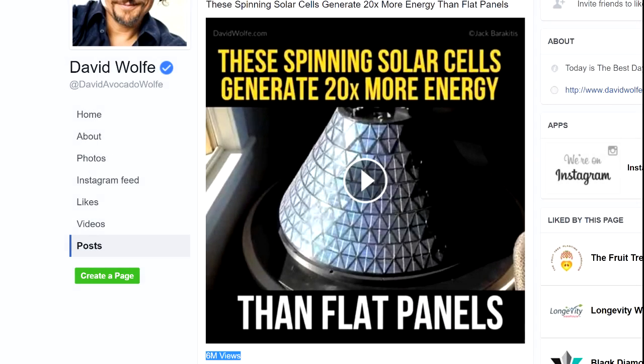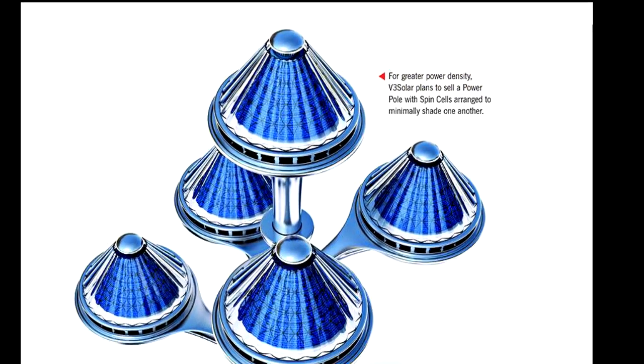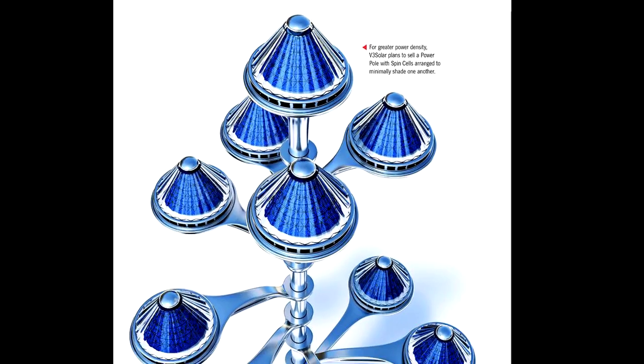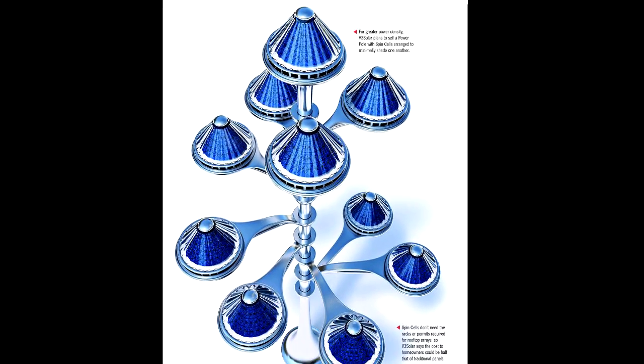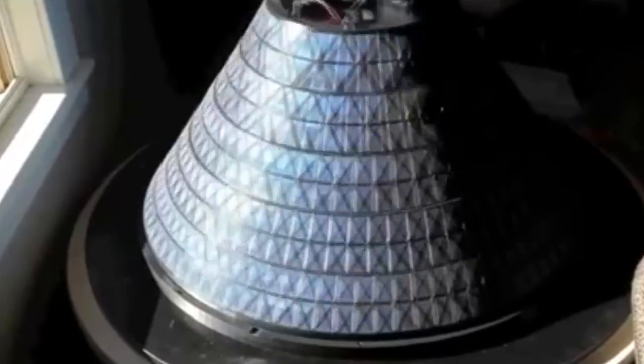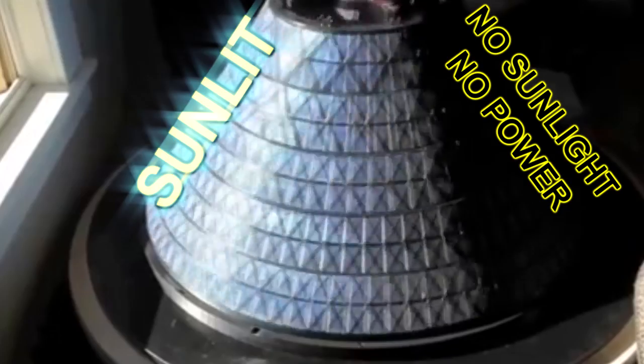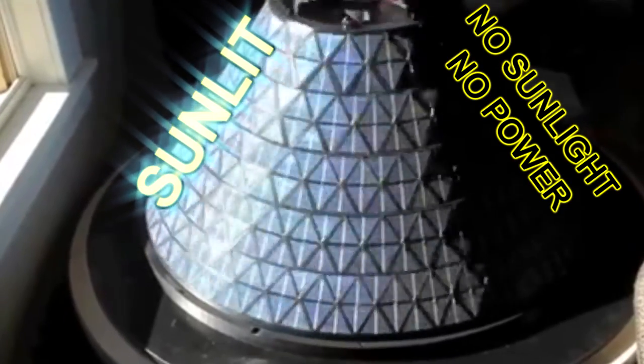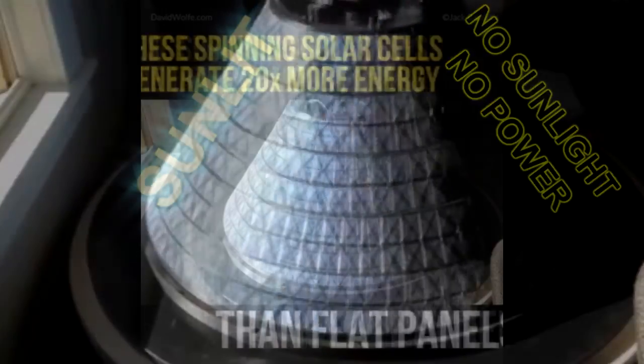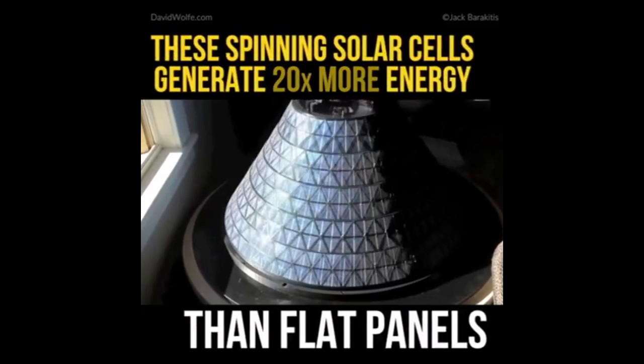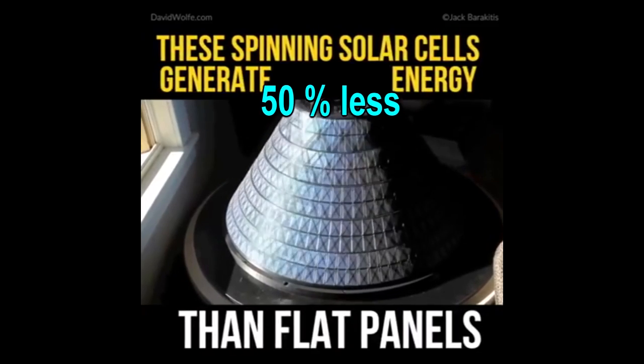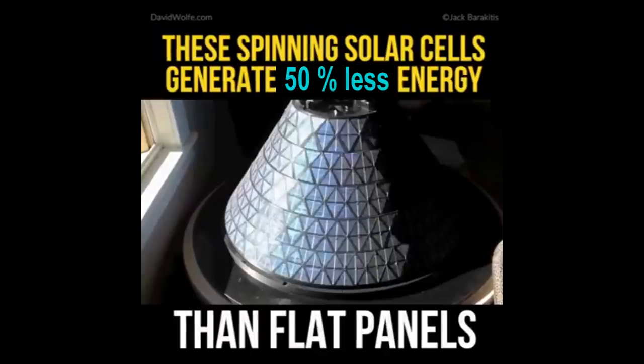So why spin these things? And why put them in a cone? Well, first of all, let's deal with the cone thing, because that's just really stupid. Because no matter where the sun is, at least half of your solar cells will not be directly in the sunlight and will essentially be generating no power. So here, let me fix that for you. Not 20 times as efficient, but half as efficient as a regular solar panel.